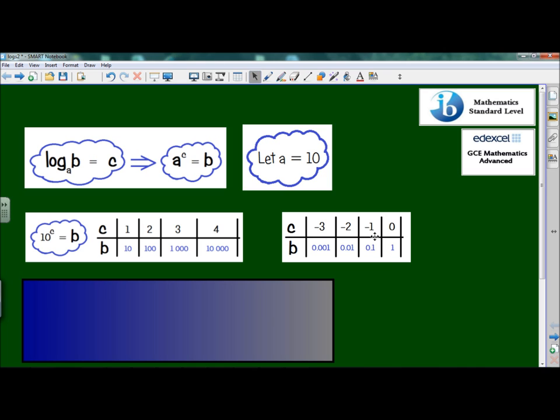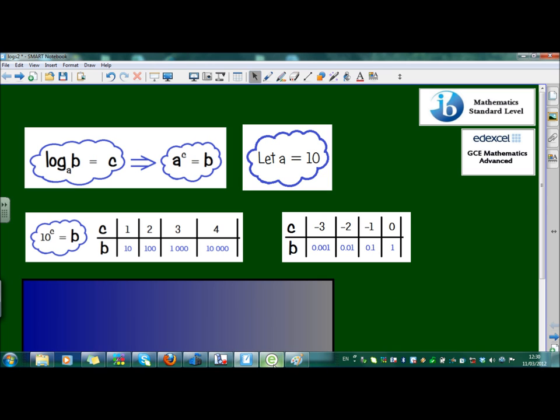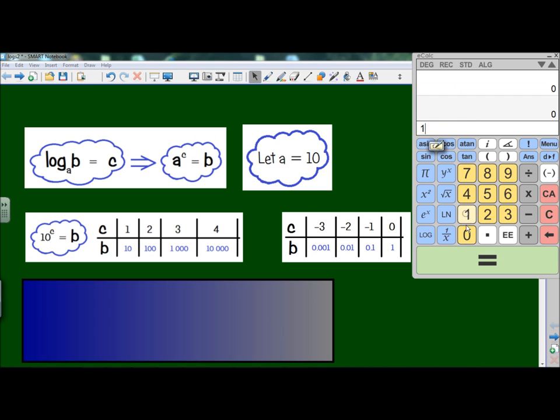10 to the power of negative 1 equals 0.1. Let's just check that one with the calculator. 10 to the power of negative 1 is equal to 0.1. And 10 to the power of negative 2 is equal to 0.01. And finally, we'll just check 10 to the power of negative 3 is equal to 0.001.